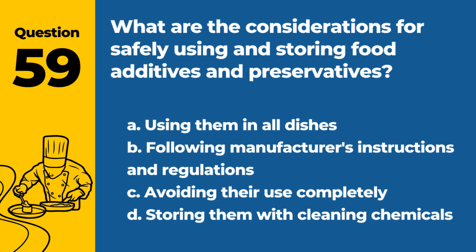Question 59. What are the considerations for safely using and storing food additives and preservatives? A. Using them in all dishes. B. Following manufacturer's instructions and regulations. C. Avoiding their use completely. D. Storing them with cleaning chemicals. Answer: B. Following manufacturer's instructions and regulations. When using and storing food additives and preservatives, it is important to follow the manufacturer's instructions and adhere to regulations to ensure safety.